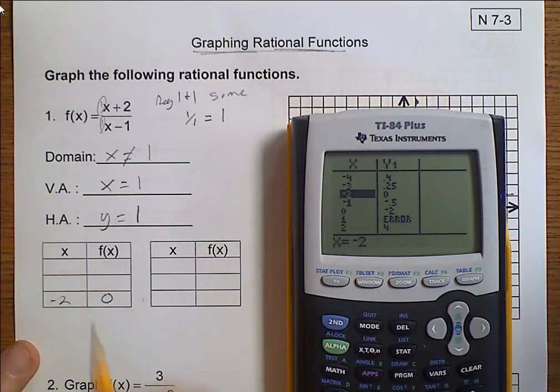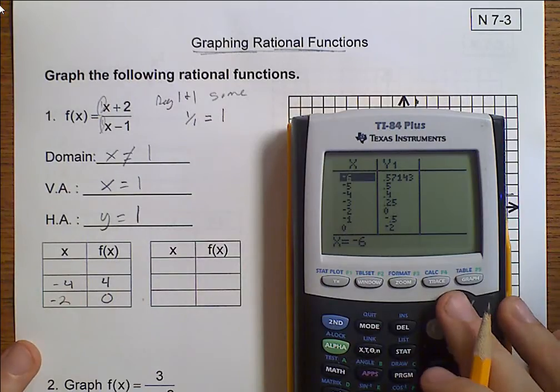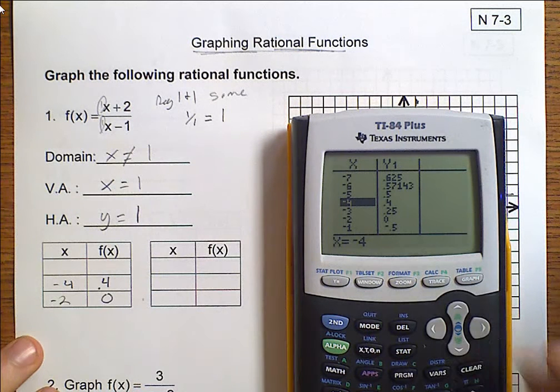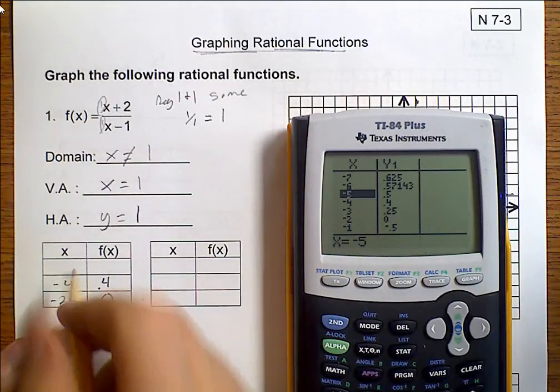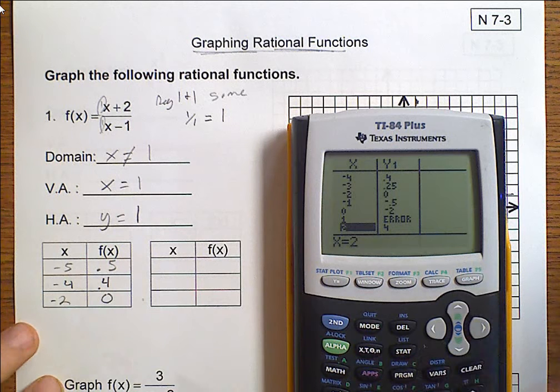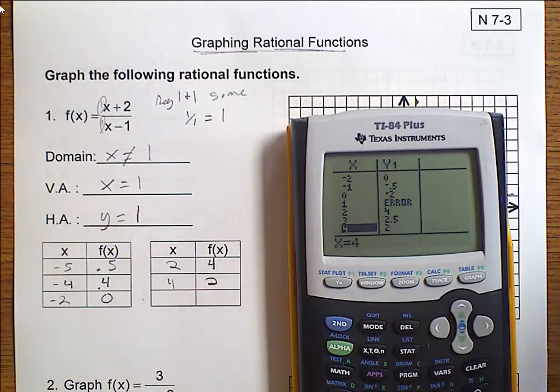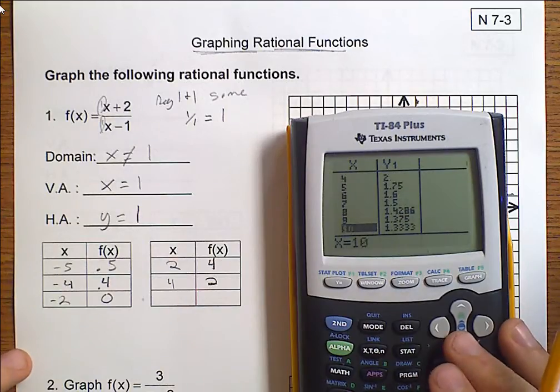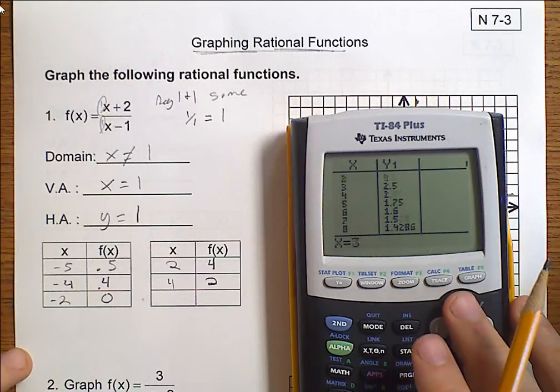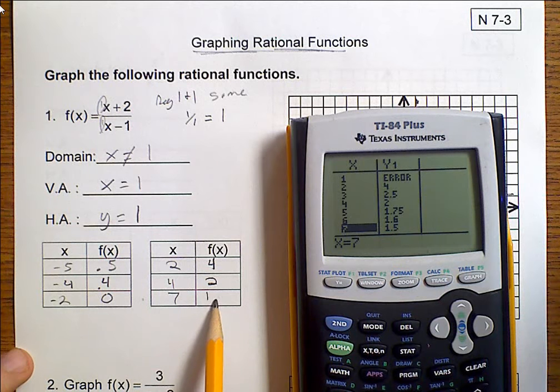So in your calculator, you want to go to y equals, clear out whatever may already be in there. And we want to go ahead and put this into our calculator. So we're going to put in parentheses x plus 2 divided by in parentheses x minus 1. The reason being, we want to make sure that our top and bottom are definitely separate. Now, instead of graphing, we're going to go ahead and just go to our table. It will be second graph. And we want to look at some important numbers. So I notice right here, I've got that negative 2 equals 0. So negative 2 is 0. If I keep going more negative, negative 4 is at 0.4. Negative 5 is at 0.5.